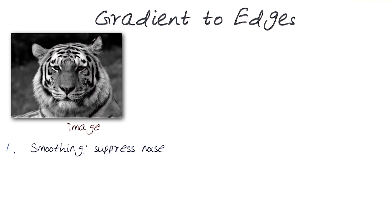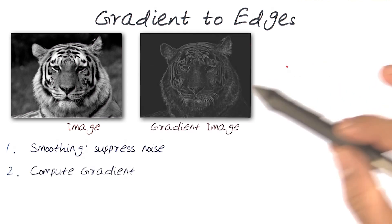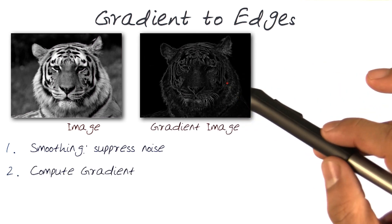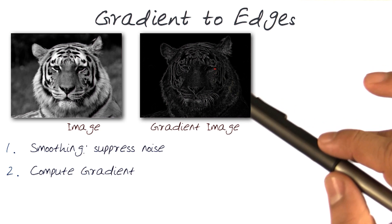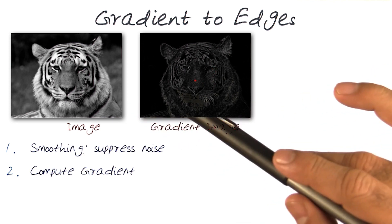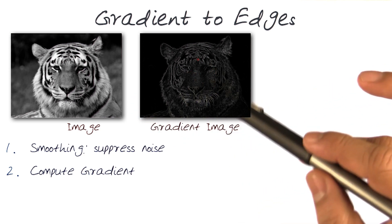As we noticed before, the first thing we want to do is suppress noise. We want to run some sort of a smoothing operation — a blur kernel — using a Gaussian kernel to get rid of some of the information. Because as we noticed, the gradient image calculation is really sensitive to noise. The next step is we compute the gradient image after the image has been smoothed out a little bit.